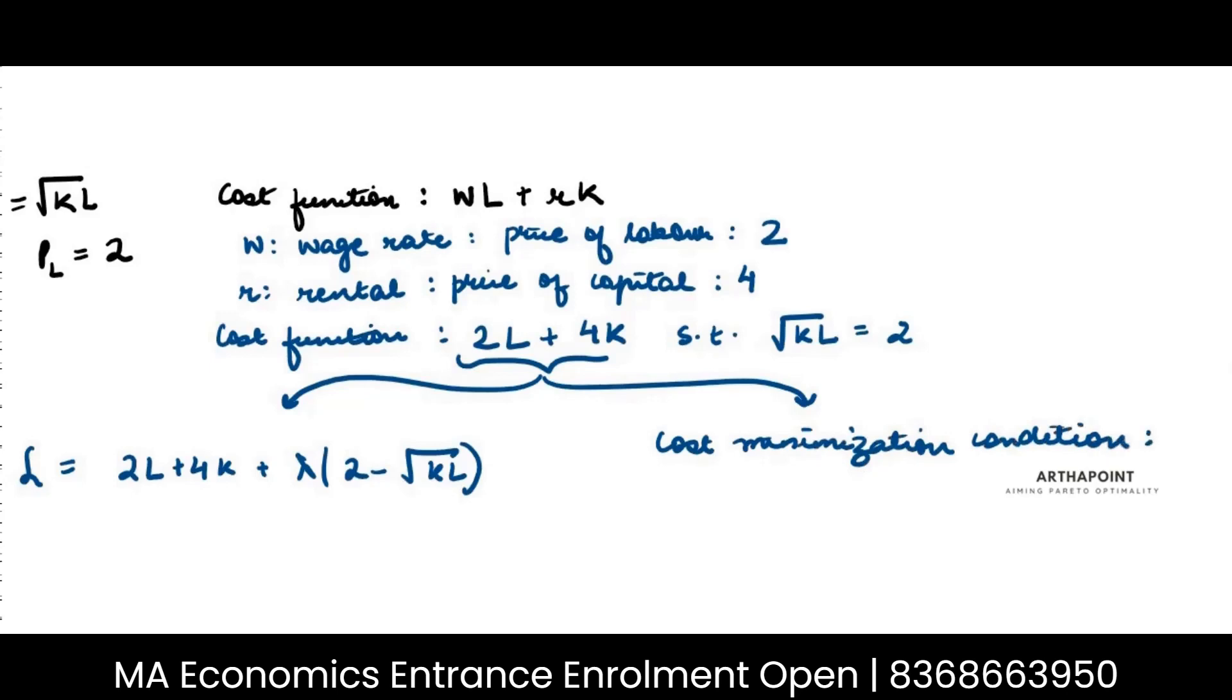So cost minimization condition. And this is given by MPL by MPK is equal to W by R. In other words MRTS LK or KL because here I am taking K below, KL is equal to W by R. This is my cost minimization condition.